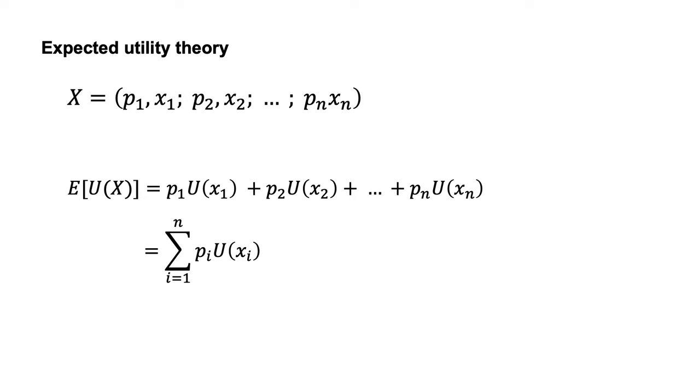Which equals the sum from i equals 1 to i equals n of PiU of Xi. You can think of this formula as comprising the following steps.